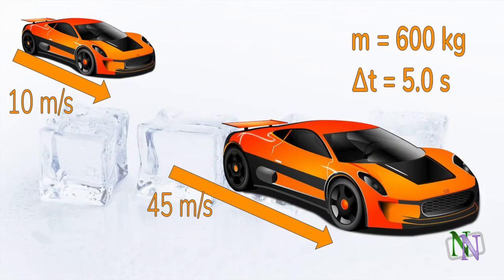Here is a calculation. The car accelerates to the right, changing its velocity from 10 to 45 meters per second in 5 seconds. And because we know its mass is 600 kilograms, we can make calculations about the momentum.